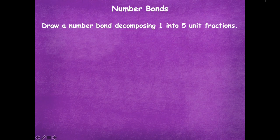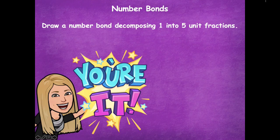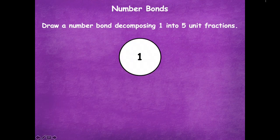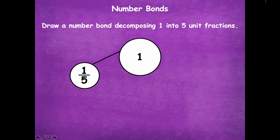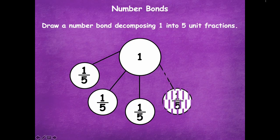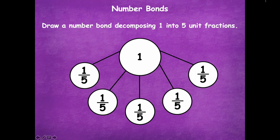Now we're going to draw a number bond decomposing one into five unit fractions. Think about what that fractional unit would be. Pause the video, draw your number bond, and click play when ready. Here's what I came up with — one as the whole, and one-fifth as the parts, because it said five unit fractions. So: one-fifth, two-fifths, three-fifths, four-fifths, five-fifths. Five unit fractions represented this way. Notice I counted around by the units each time to make sure I had the correct total. You could also just write one-fifth five times — that's fine too.